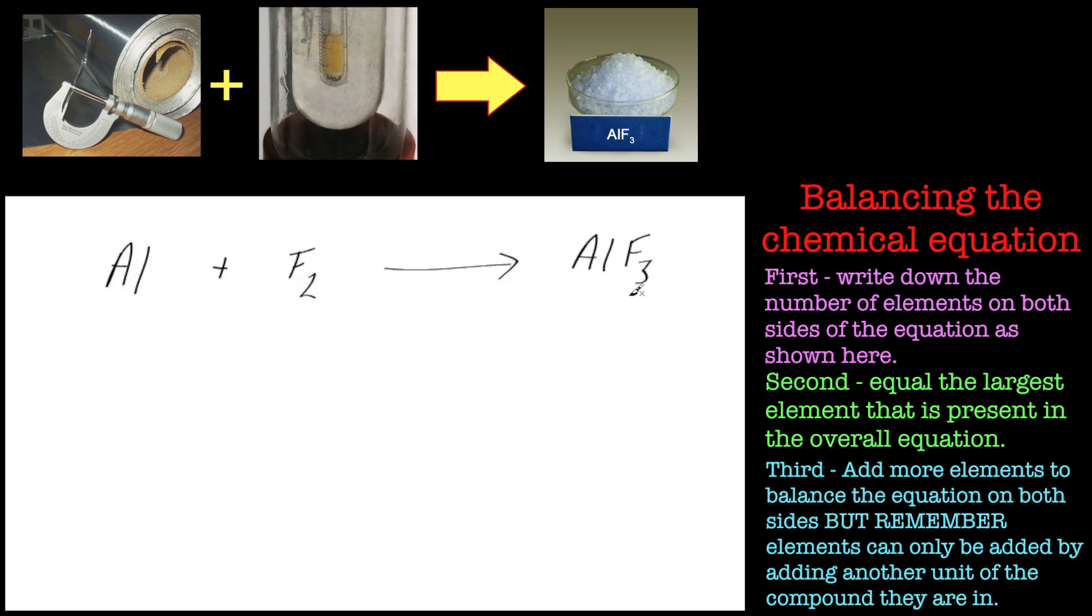Now you probably know that I don't like these odd type of elements here like three fluorines on this side because it gets really difficult to balance. So we're going to apply the method of just adding up the elements on either side.